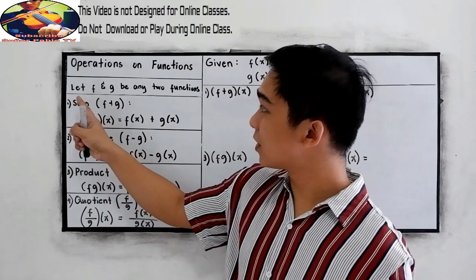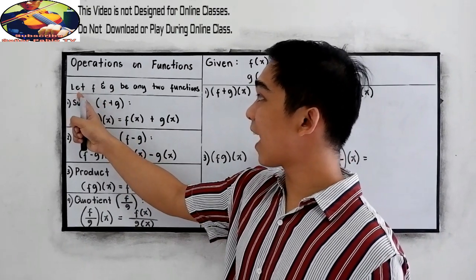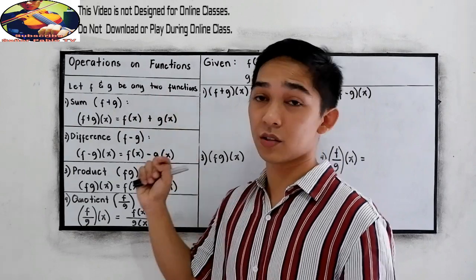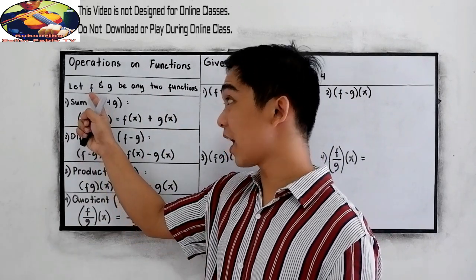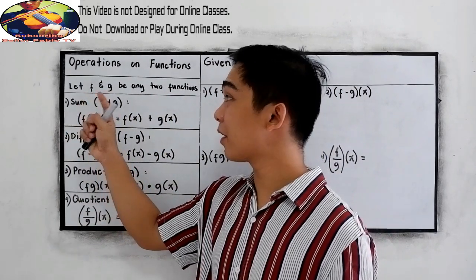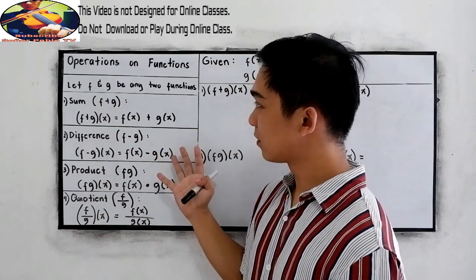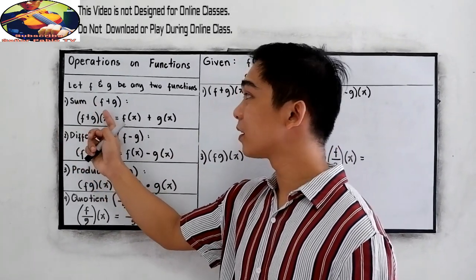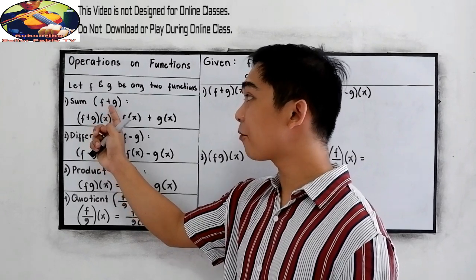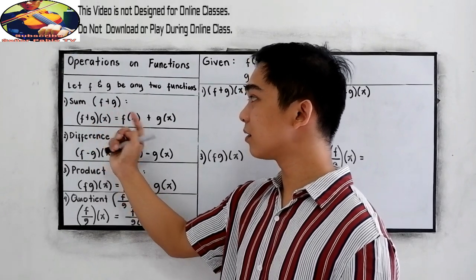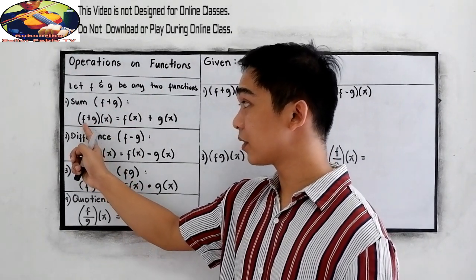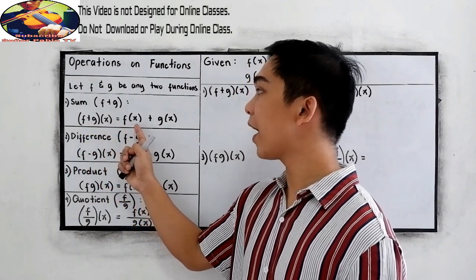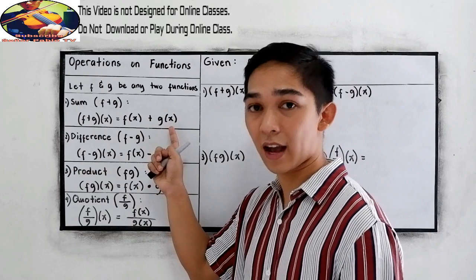If we have, let's say, let f and g be any two functions. For the addition or sum, f plus g, that is equal to (f+g)(x), the same as f(x) plus g(x).